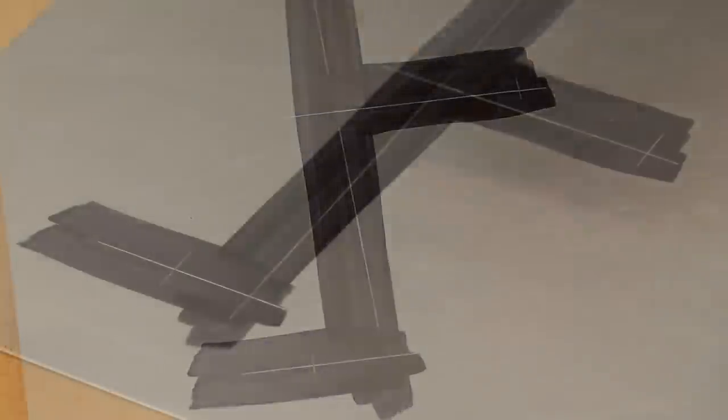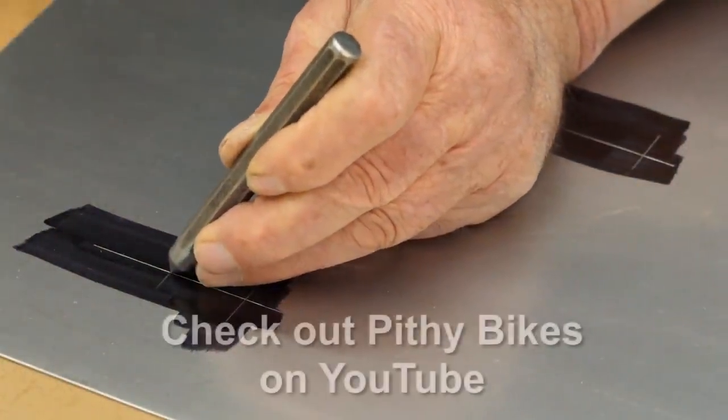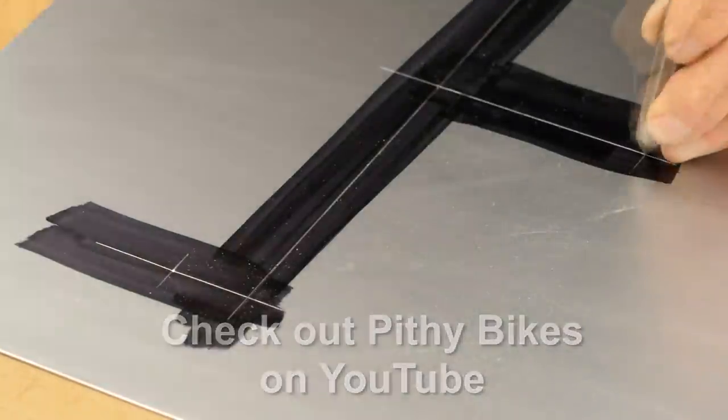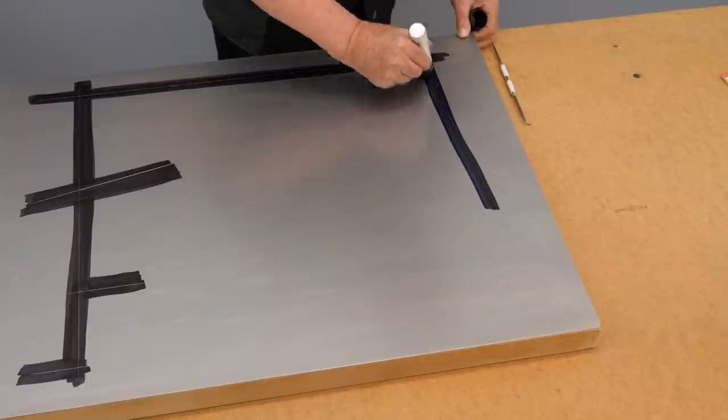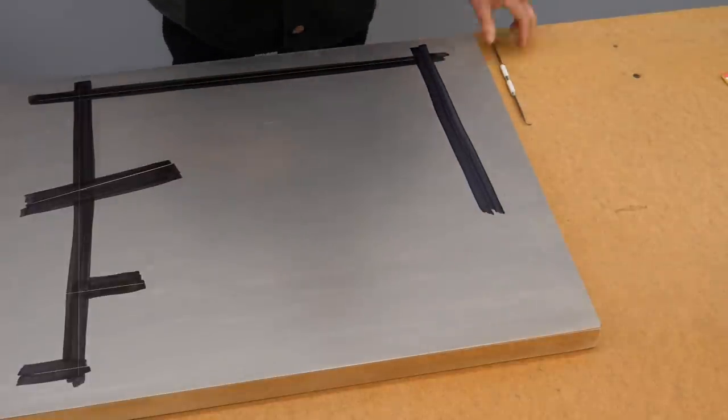To see a good example of a heavy duty adjustable frame jig, check out the Pithy Bikes YouTube channel. Last, I'll lay out the position and angle of the head tube.